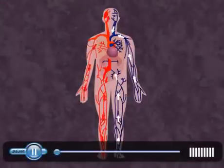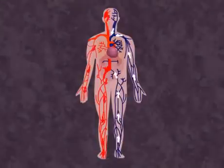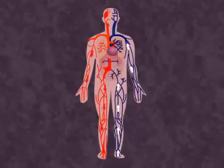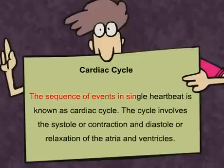Our heart is an important component of the cardiovascular system. It creates pressure every time it beats, and this pressure moves the blood to every cell in our body. Now let us see what is the cardiac cycle. The sequence of events in a single heartbeat is known as the cardiac cycle.